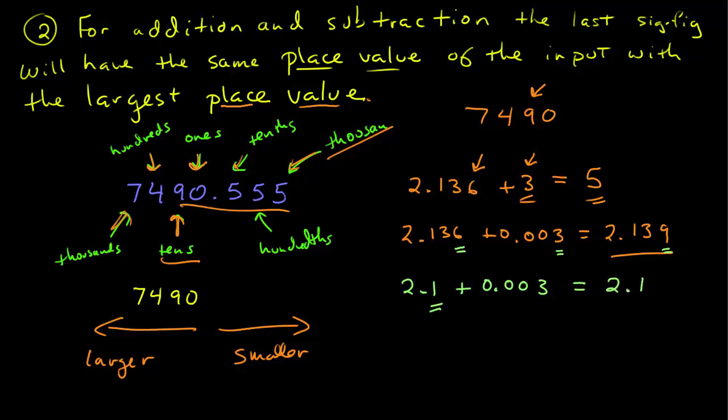Here we have 2.1 plus 0.003 is now equal to 2.1. There's the tenths place. This is the thousandths. And so the result, the last one will be in the tenths place. And we would round to that digit, and so the 3 doesn't add any value at all.